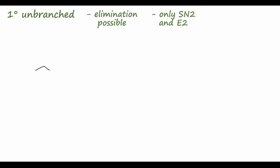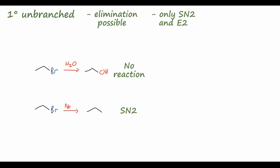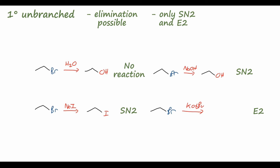Our example is ethyl bromide. Reacting with water to form ethanol won't occur — water is not a strong enough nucleophile. Ethyl bromide with sodium iodide gives ethyl iodide in an SN2 process. Ethyl bromide with sodium hydroxide — our strongly basic, unhindered nucleophile — forms ethanol in SN2. Finally, ethyl bromide with potassium t-butoxide undergoes an E2 mechanism to form ethylene, making the double bond and kicking off bromine.